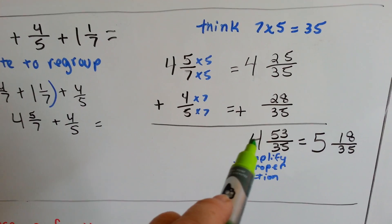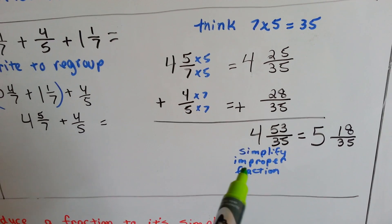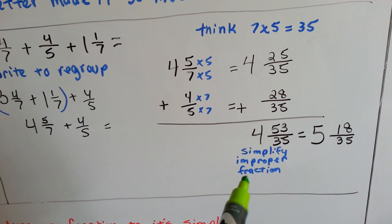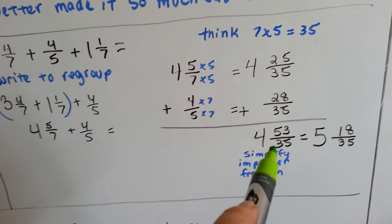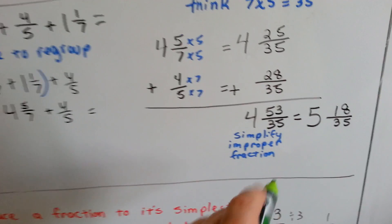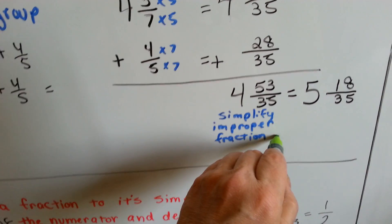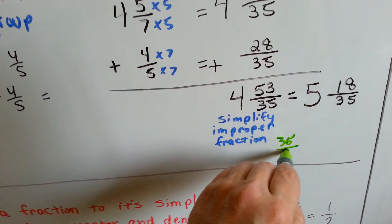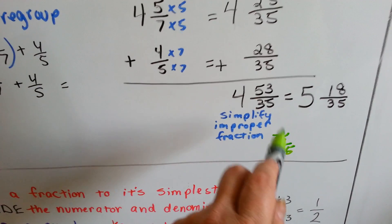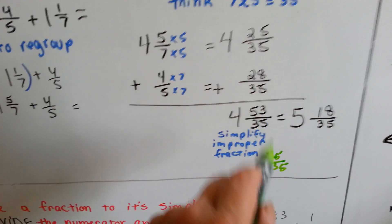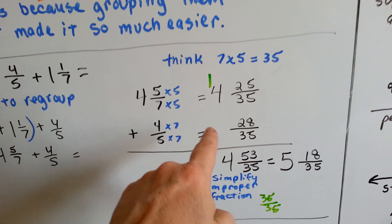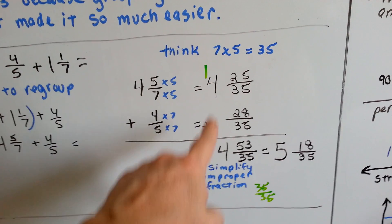Now we have 4 and 53 thirty-fifths, and we need to simplify this because it's an improper fraction. We know 35 can fit into 53, and we'll get a 35 thirty-fifths out of it. There's one of those hiding in here, so we take that out and give it to the whole number side.